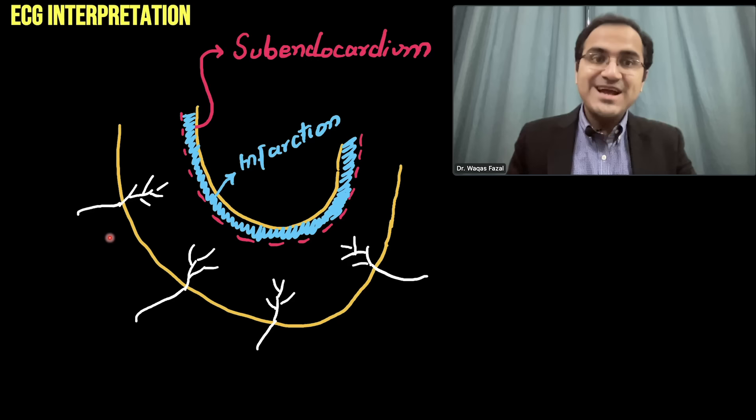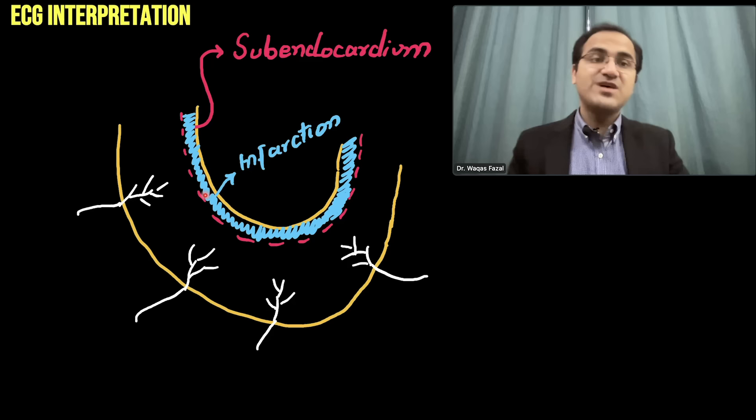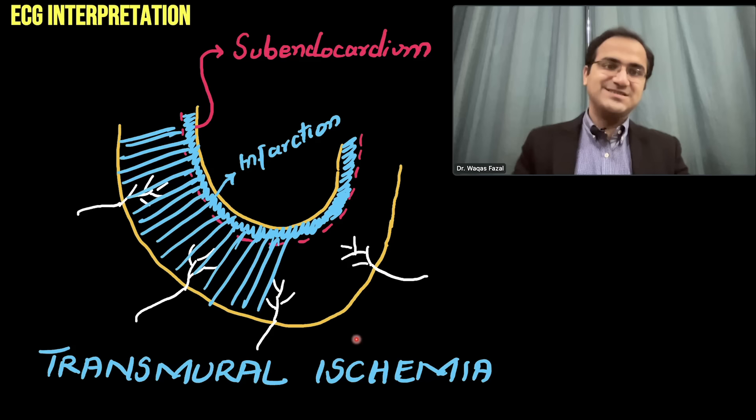When ischemia persists for a longer period of time, this inner heart tissue will die — that is called infarction, specifically subendocardial infarction. As time progresses and there is complete obstruction of the coronary vessels, there will be complete ischemia of the whole thickness of the heart muscle — that is called transmural ischemia.